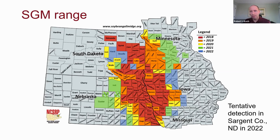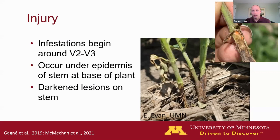The known range of this insect has expanded, as shown on the map by colors. In Minnesota, no new counties were added in 2022, but in 2021 through extensive survey efforts by Bruce Potter and his staff, soybean gall midge was found in quite a few additional counties. Those survey efforts will continue this year. It's a hot topic, and across the region entomologists and extension folks are keeping a close eye on this pest.